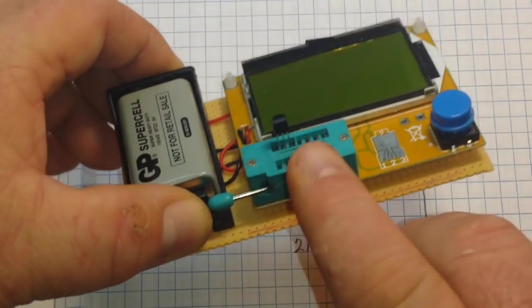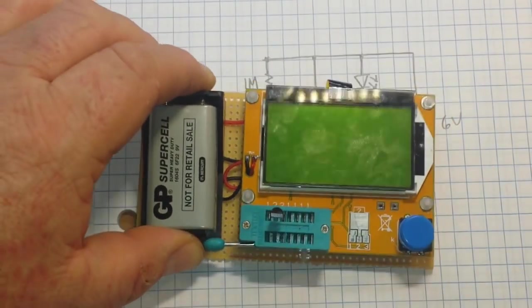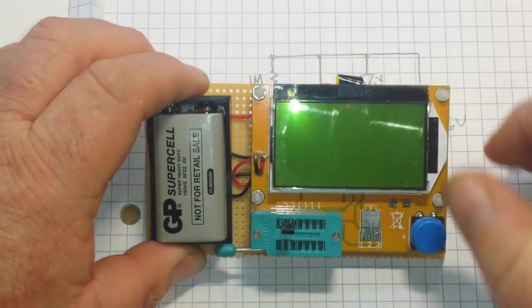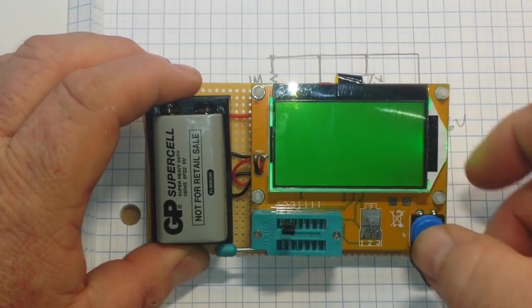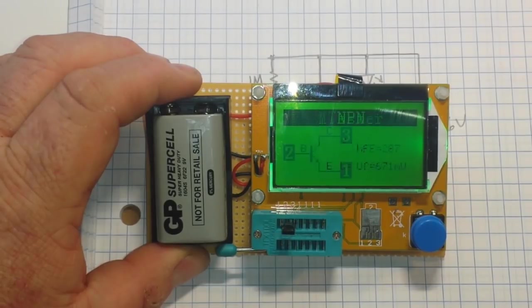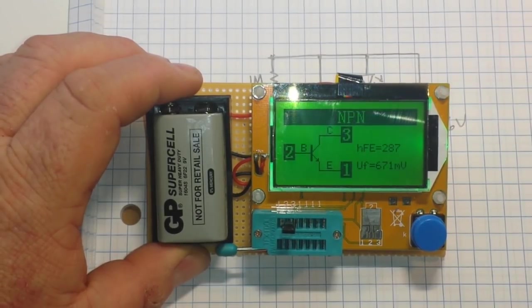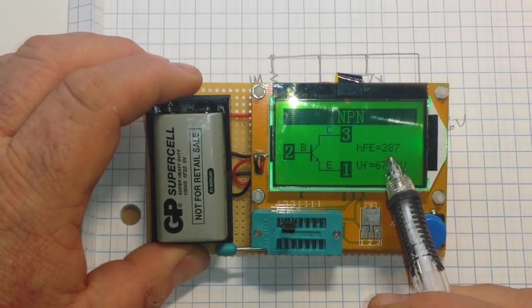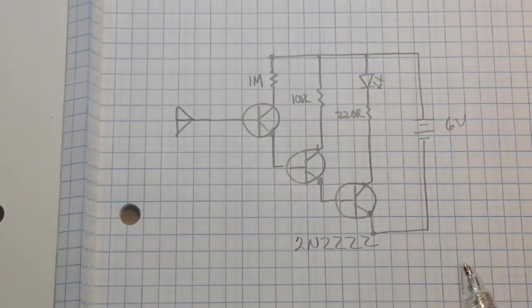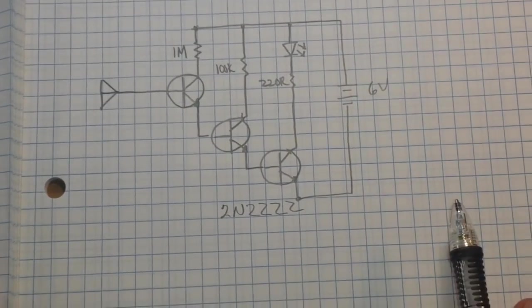Okay, here is a 2N2222 here in the component tester, and if we turn it on, you can see our gain is 287. So let's round that up to 300.